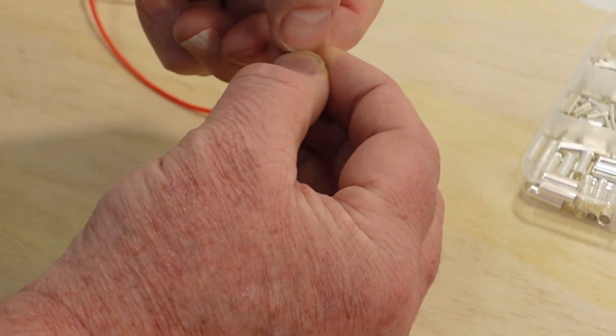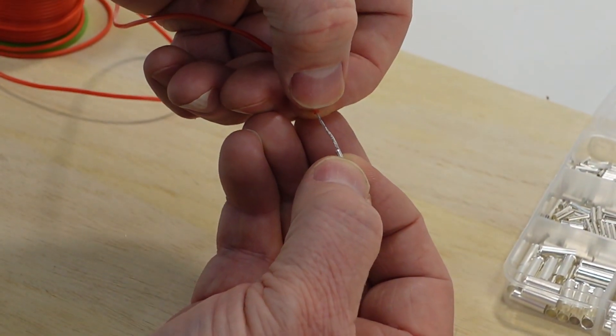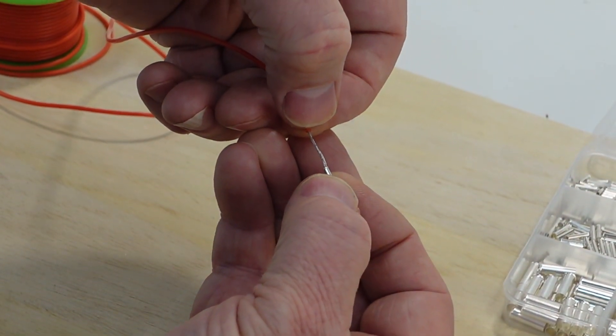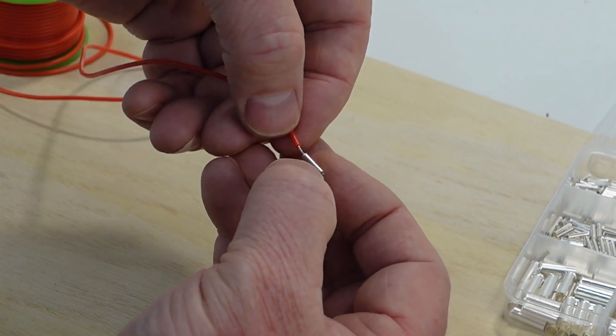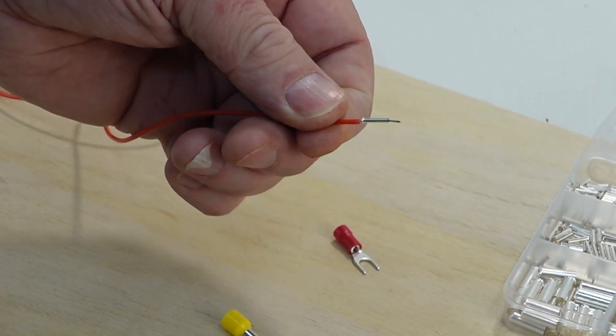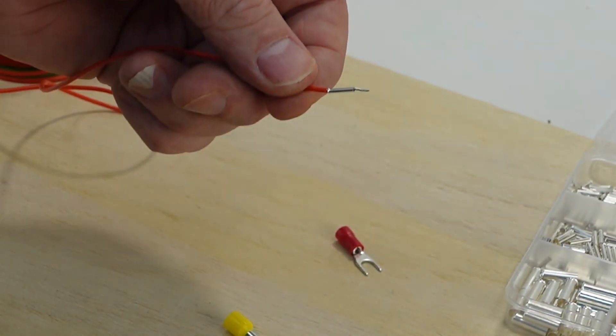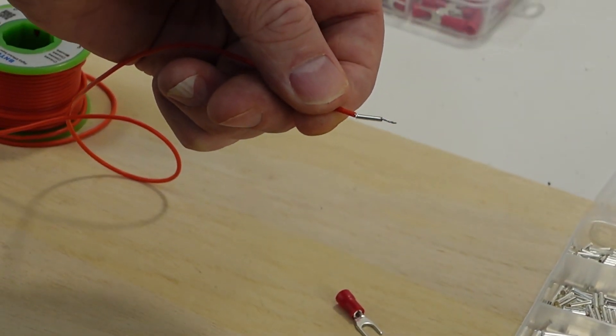So we're going to thread the wire onto the ferrule. Just like what you would normally do when you're putting ferrules onto the end of wire. You can see we've got a little bit of wire sticking out the end. We're not going to worry about that just yet. But there's the ferrule on the wire.